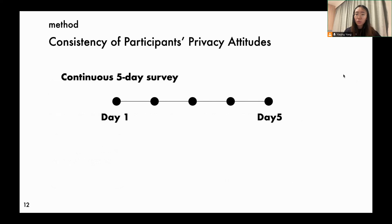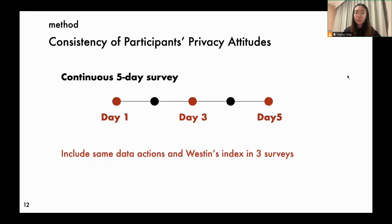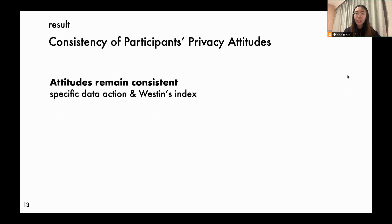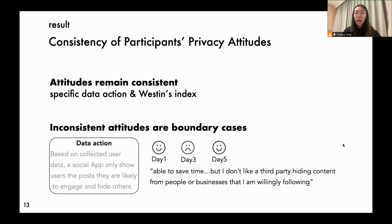In the survey, each participant was required to finish one survey a day for five days. This reduced participants' fatigue, and more importantly, allowed us to test our first research question: if participants remain consistent to their own privacy attitudes. We inserted several same data actions and Westing's index in three surveys, and tested the answer inter-consistency from each participant. For both our selected scenarios and Westing's index, our results indicate a strong alignment within users' own answers across three tests. There are also outliers, but they are usually boundary cases where participants have neutral attitudes towards specific data practices.